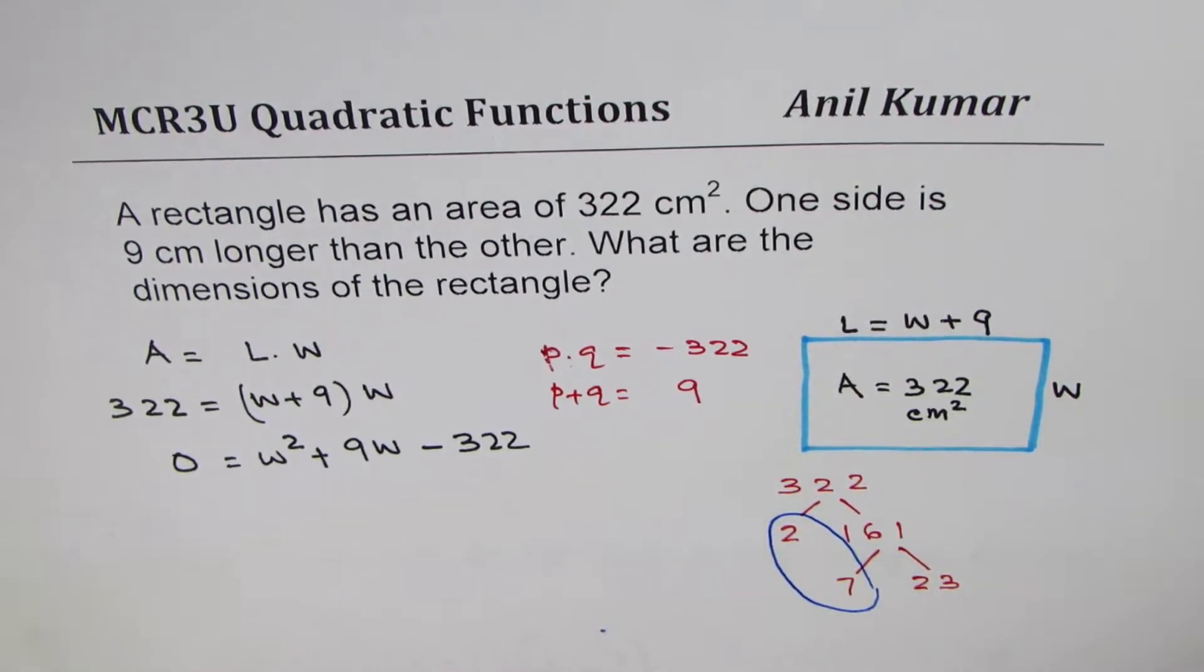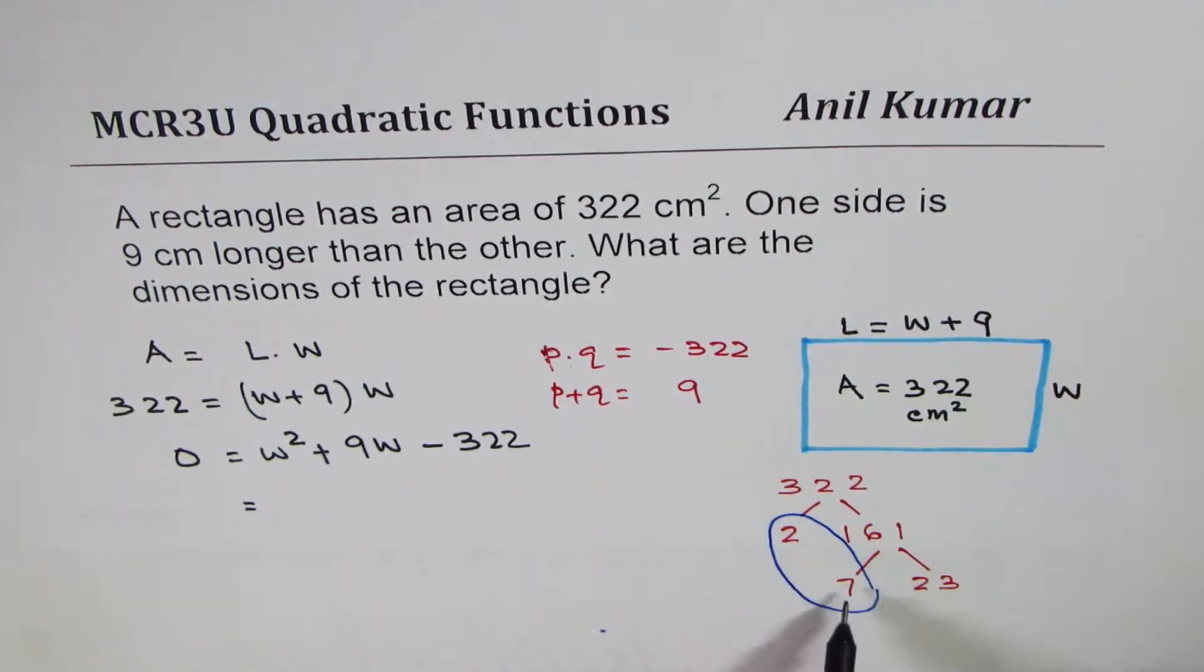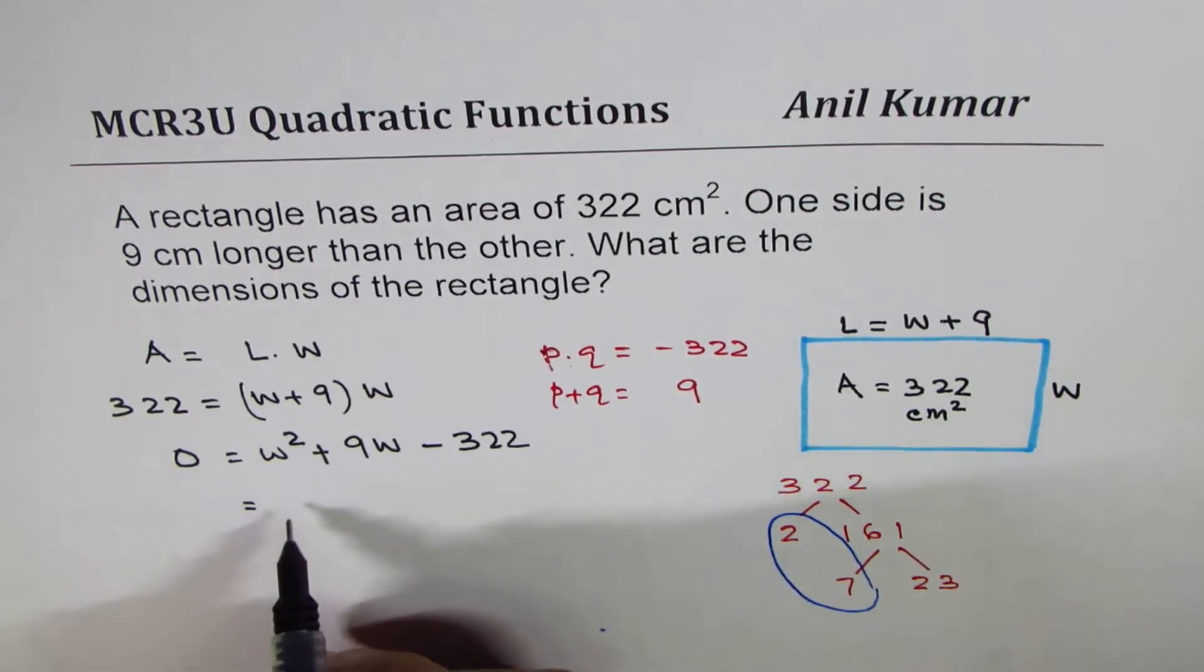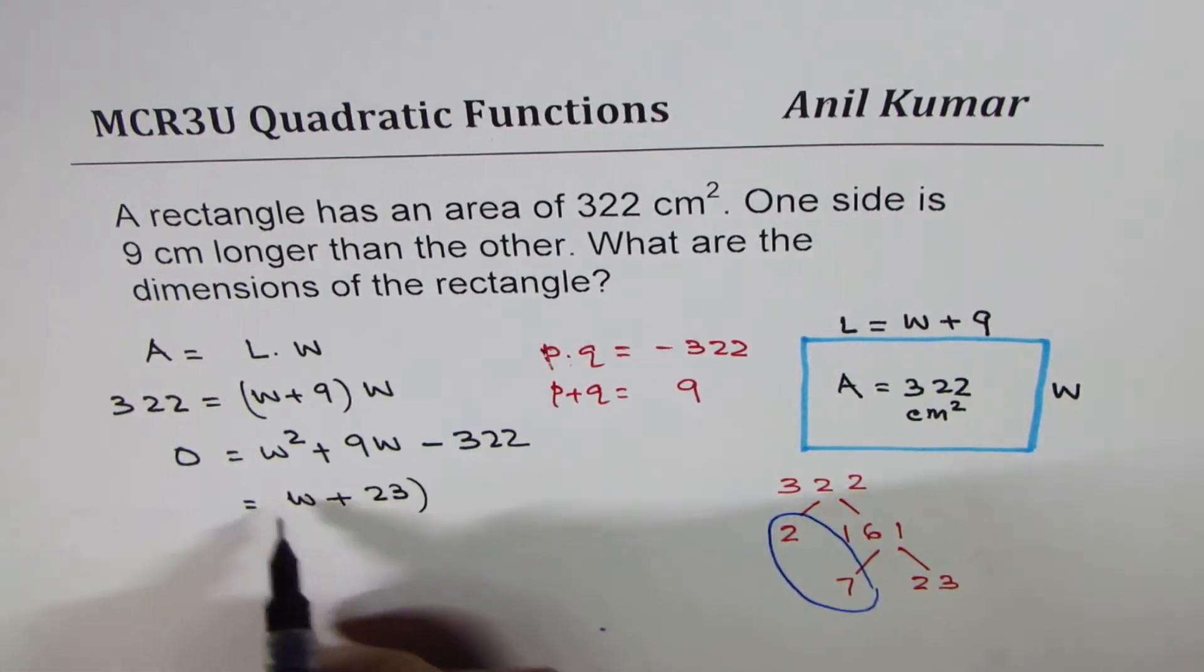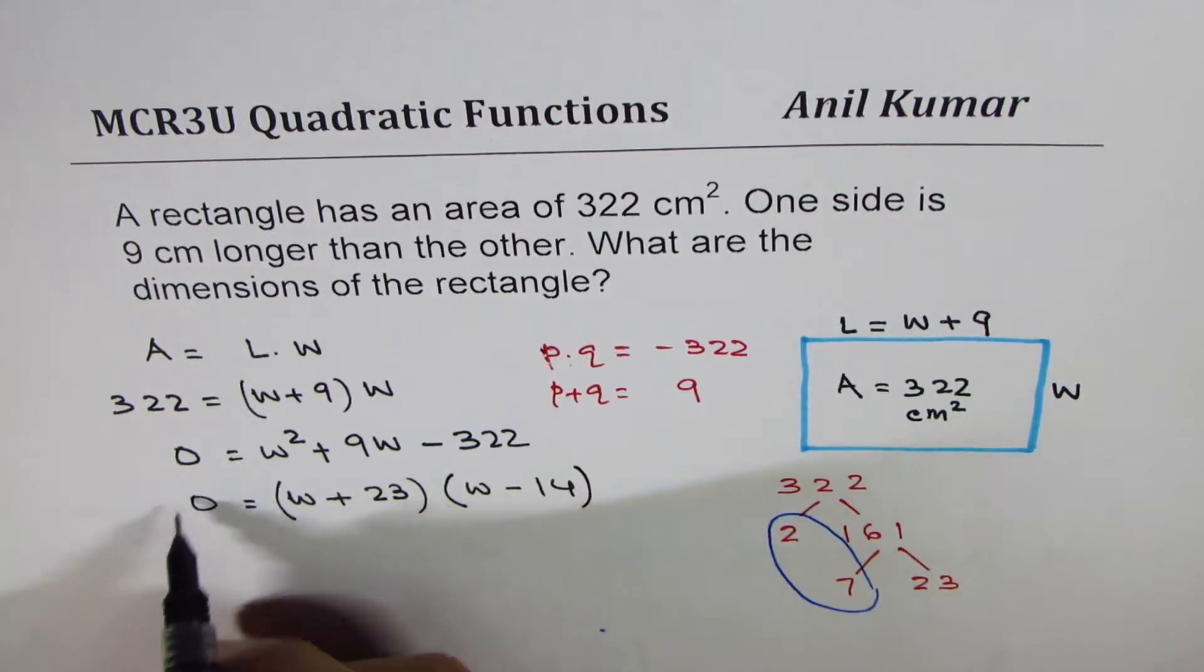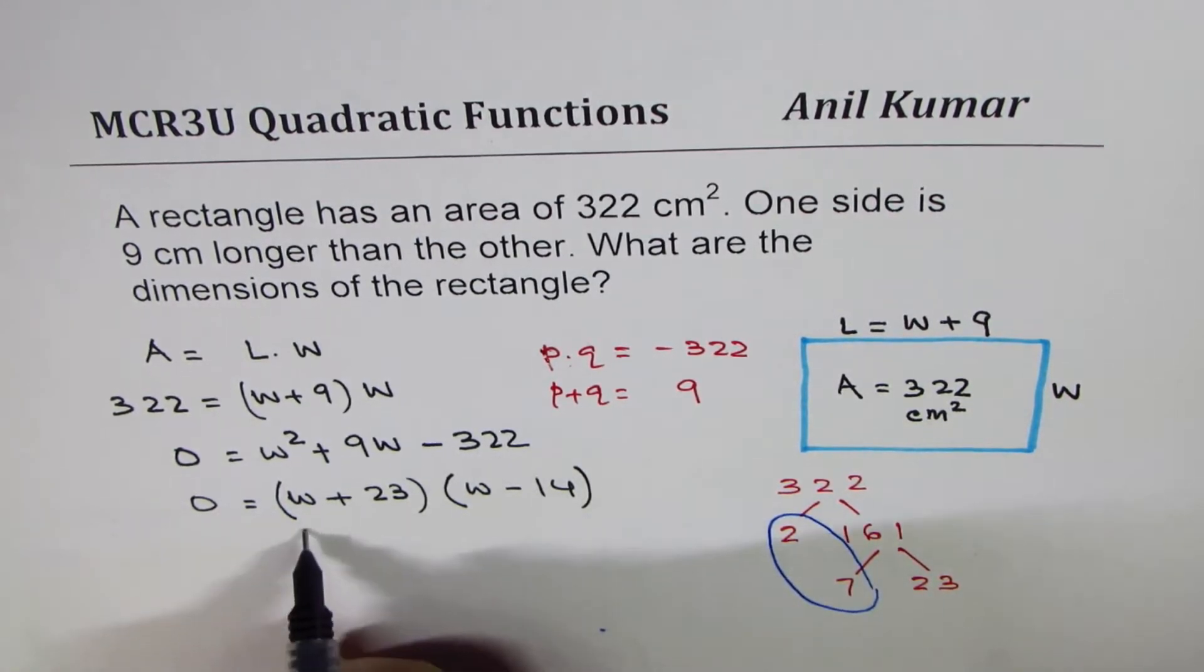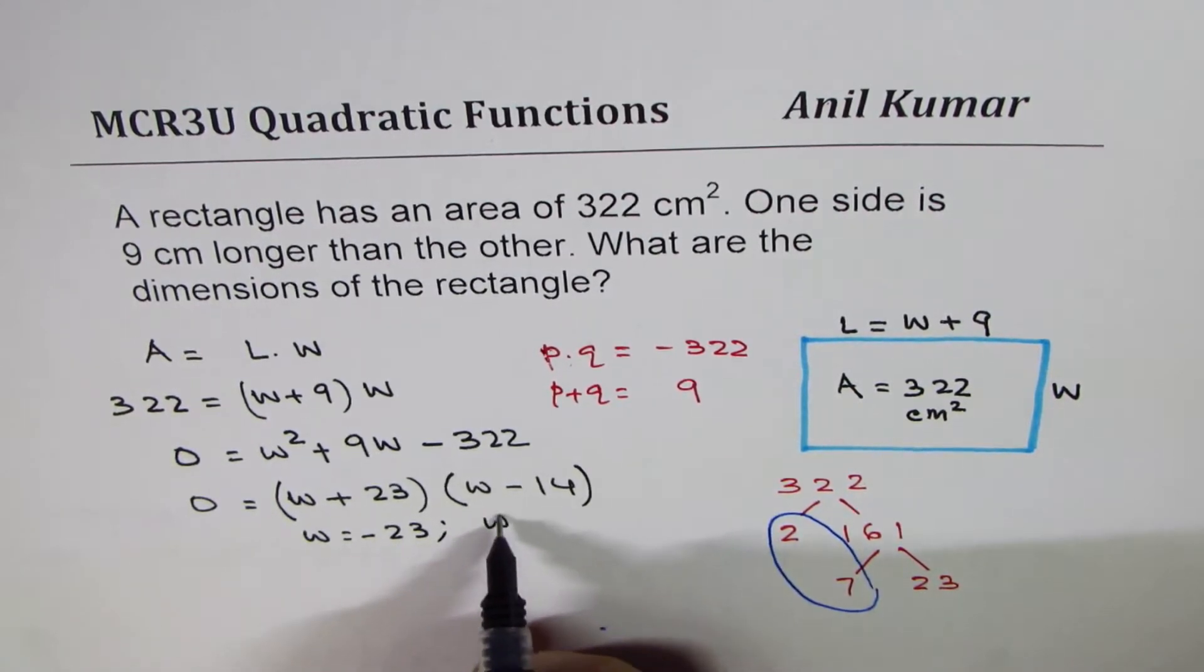If you take away 14 from 23 you do get 9. So I could factor it as a combination of 14 and 23, where 23 is going to be positive since the sum is positive. So we can write this as W times (W plus 23) times (W minus 14).